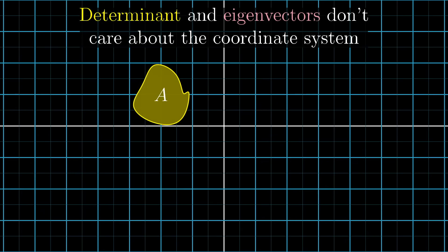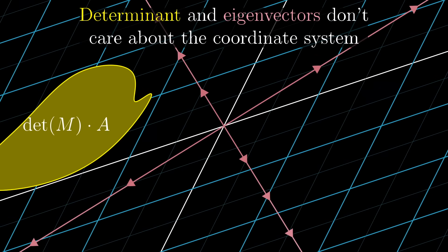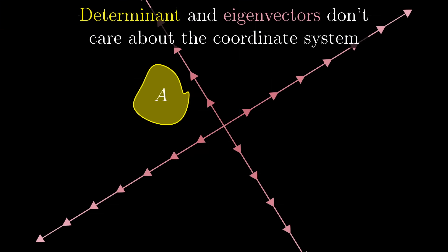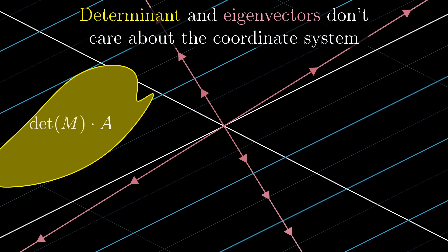Core topics in linear algebra, like determinants and eigenvectors, seem indifferent to your choice of coordinate systems. The determinant tells you how much a transformation scales areas, and eigenvectors are the ones that stay on their own span during a transformation. But both of these properties are inherently spatial, and you can freely change your coordinate system without changing the underlying values of either one.